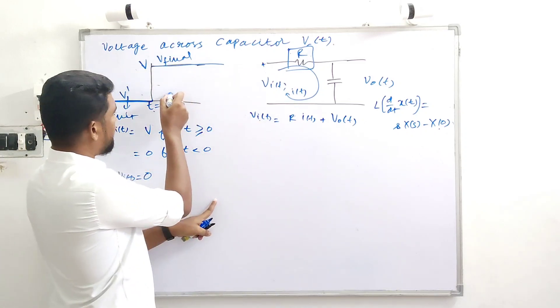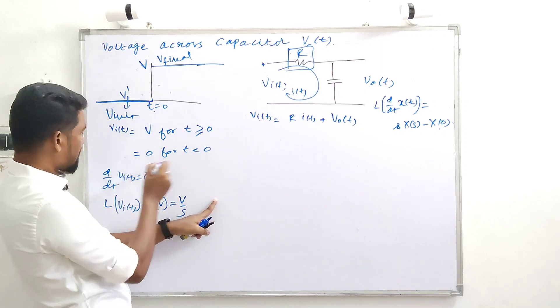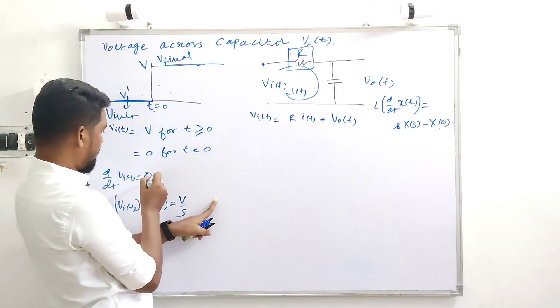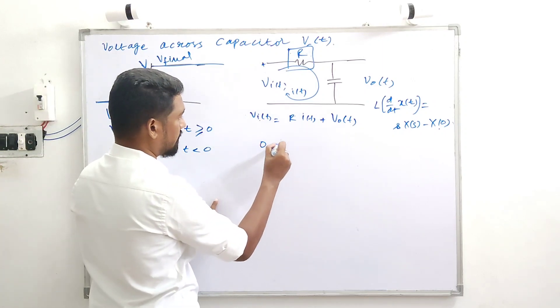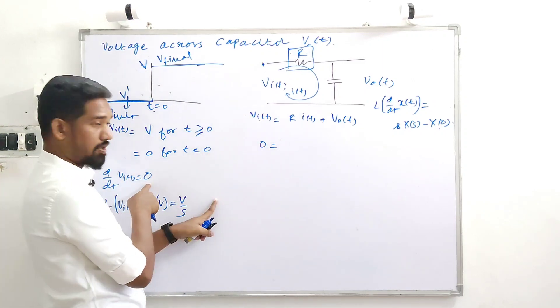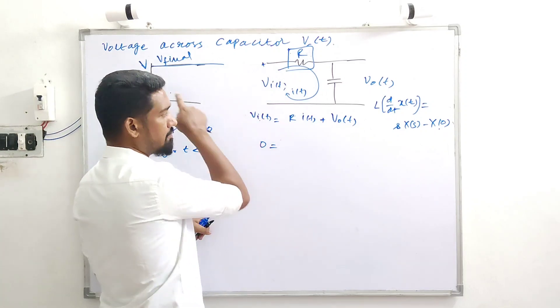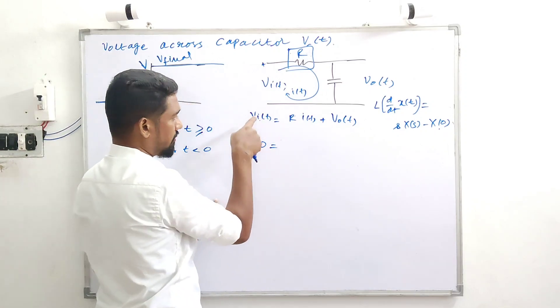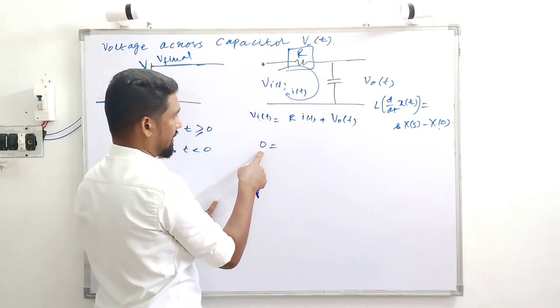Vi is a step function, it's a constant. So d/dt of Vi — derivative of step function — is equal to 0. That's it.